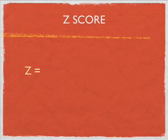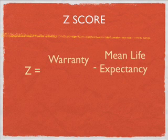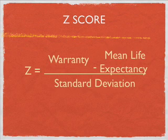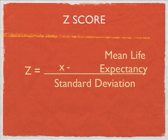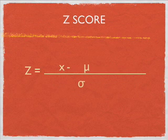The z-score is equal to the warranty minus the mean life expectancy, divided by the standard deviation. The warranty is the specific observation x, the mean life expectancy is mu, and the standard deviation is sigma — representing how long one of these iPhones will last.